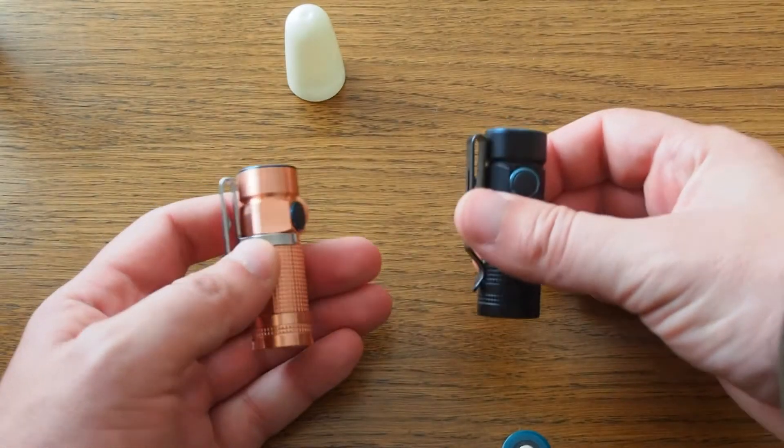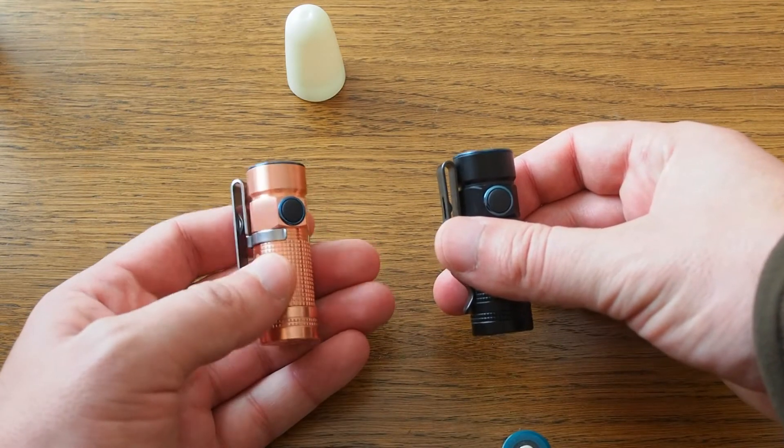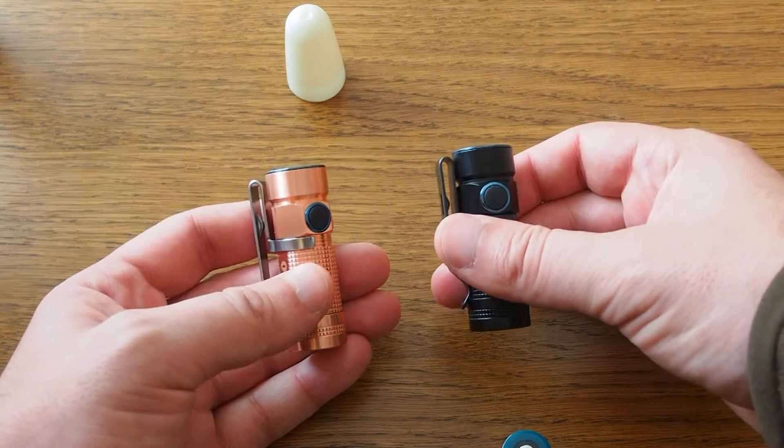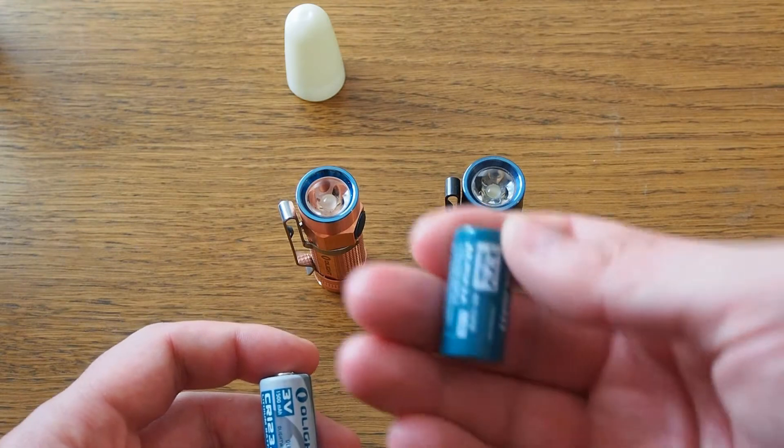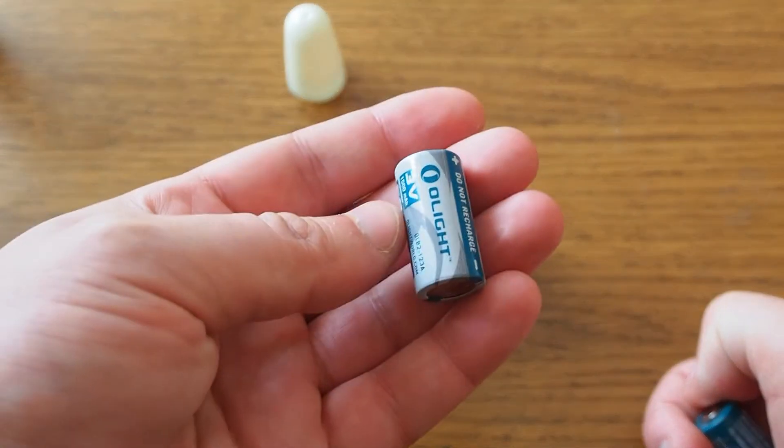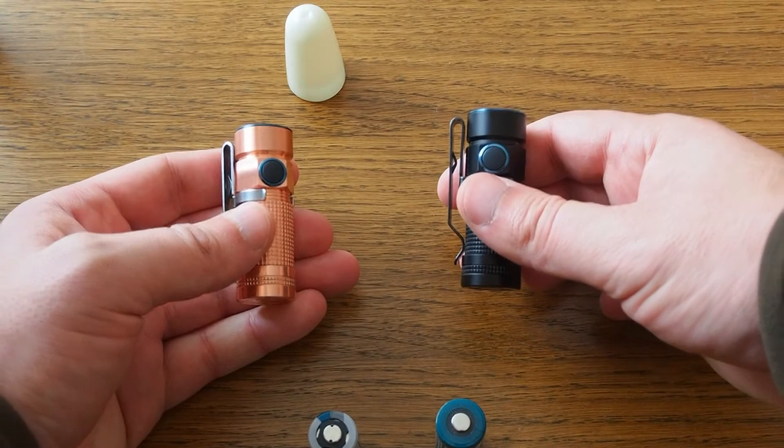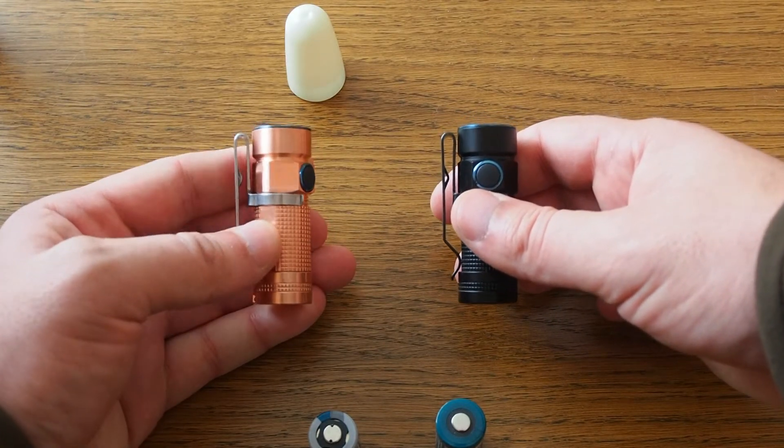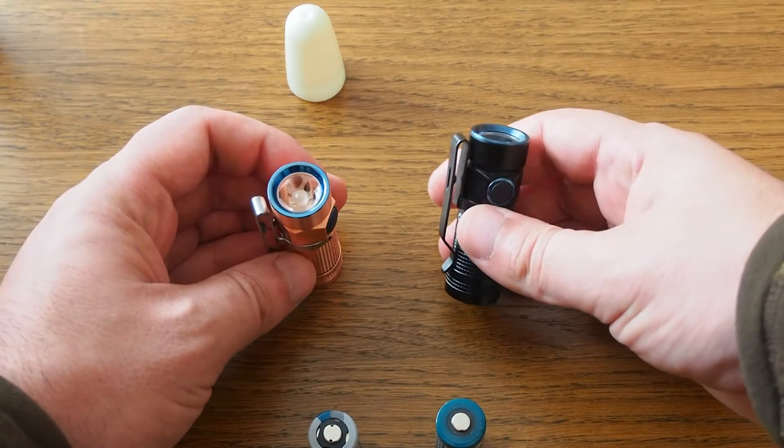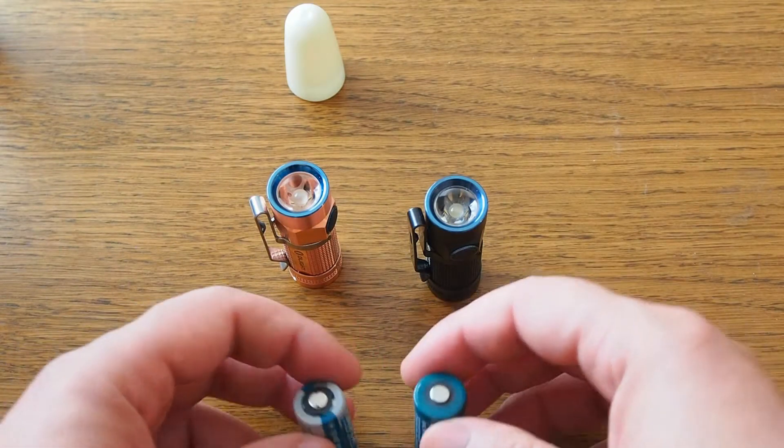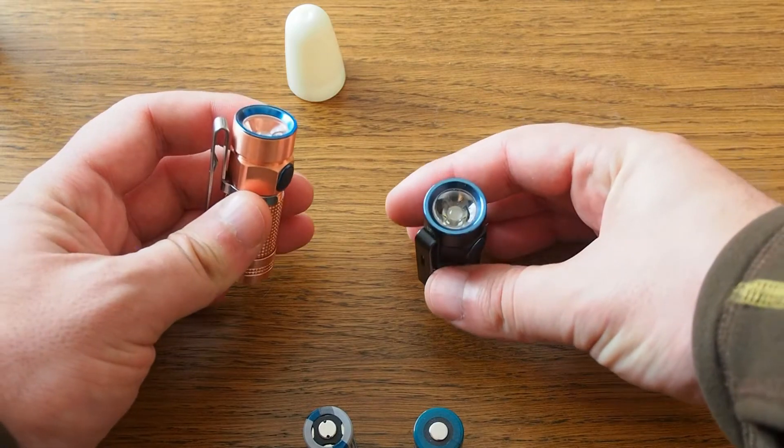At the maximum 500 lumens, it runs for 90 seconds and then automatically drops to 300 lumens for one hour on the rechargeable and one and a half hours on the non-rechargeable batteries. On the medium setting of 80 lumens, it runs for four hours on the rechargeable and six on the non-rechargeable. This is my most used setting on this flashlight. It has a nice, even white beam.